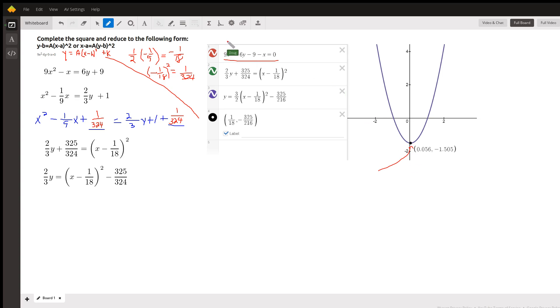To complete the square, what you want to do is collect the terms containing x, x squared, 9x squared minus x, equals and transpose the other two terms, the negative 6y and the negative 9 to the right side of the equal sign.